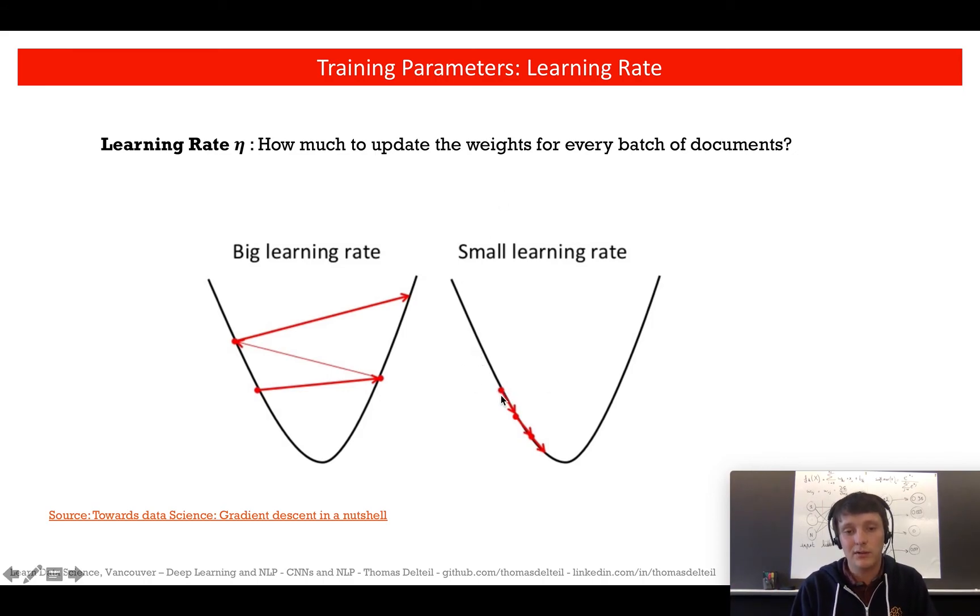If you put a small learning rate, you're going to move small step by small step, sometimes too small. And sometimes you'll never leave a local minima. So you need to find the right balance between these two extremes.